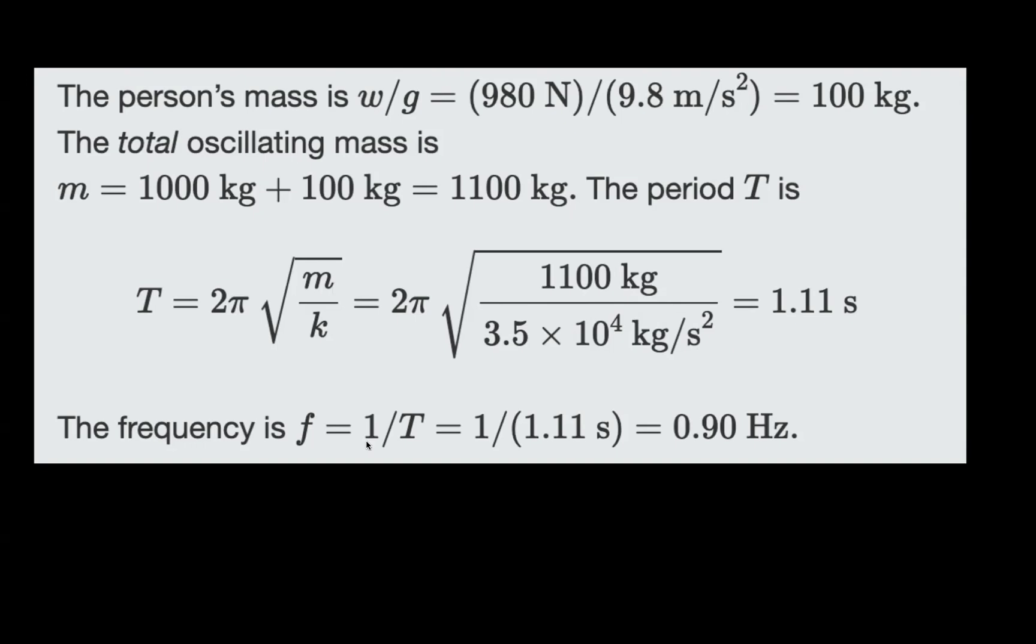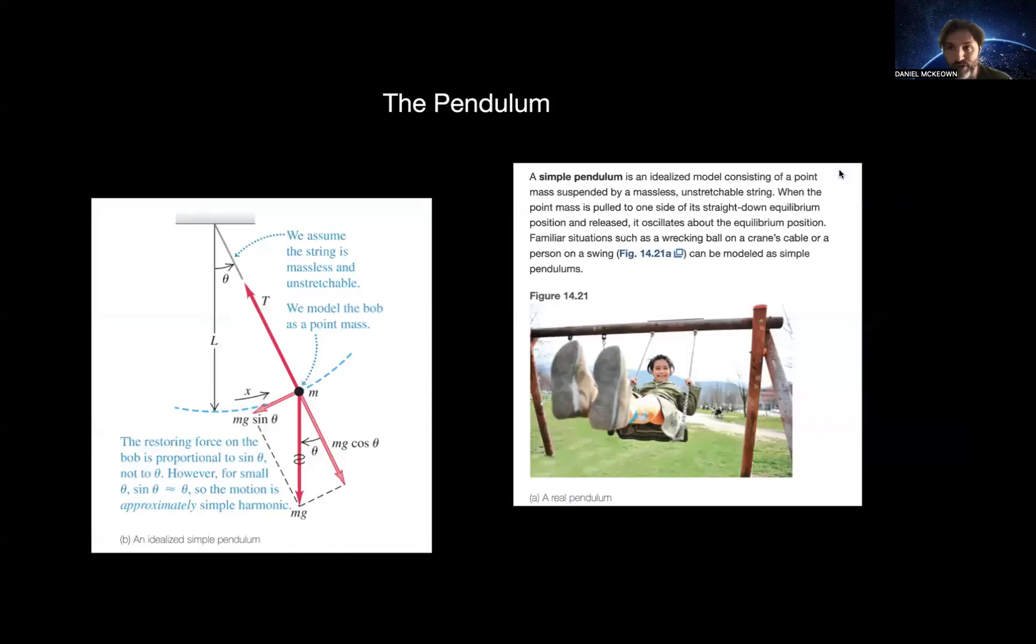So then the frequency f is going to be 1 over t. That's going to be 1 over 1.11 seconds. So we have everything that we need to solve the problem. The frequency of the car bouncing up and down is 0.9 hertz. So that's a cool little application of simple harmonic motion.